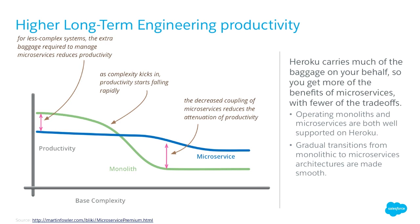The promise from an organizational perspective is higher long-term engineering productivity. In the beginning with few teams and few services, there's some inherent complexity in running microservices that doesn't pay off compared to the benefits. But as complexity grows over time, there's a trade-off where the monolithic architecture makes you less productive long-term. Heroku is great for running both monoliths and microservices architectures, and provides an easy path from one to the other.